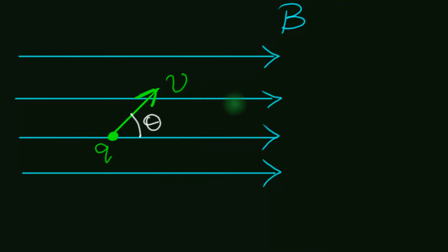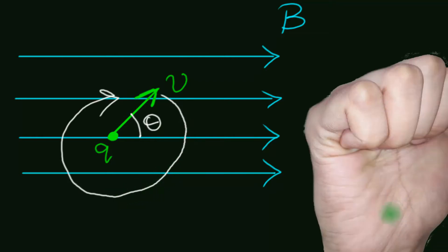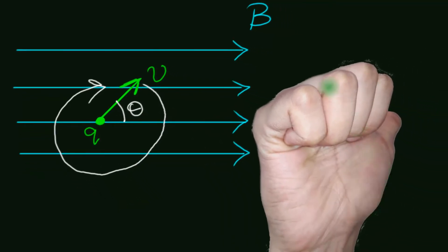For anything, we need to first figure out the direction of the force. Velocity is this way and the magnetic field is towards the right. If we take V cross B — remember, force is in the direction of V cross B for a positive charge — that rotation from V to B is this way. Using the right-hand rule, the magnetic force must be into the screen.